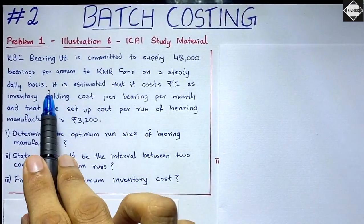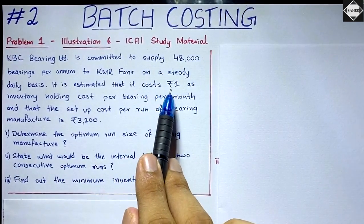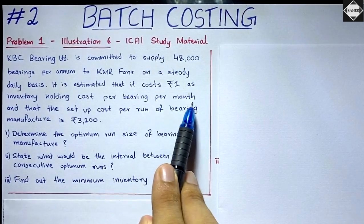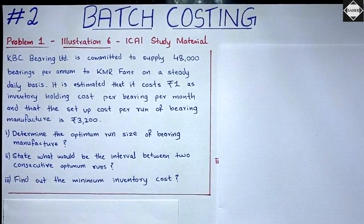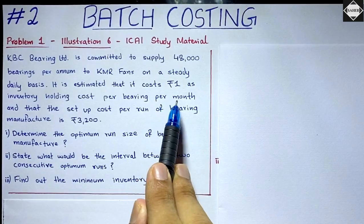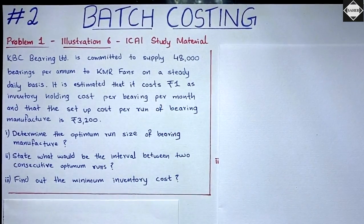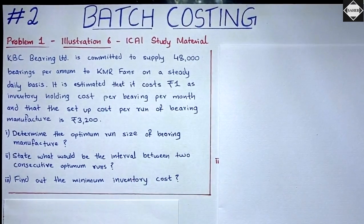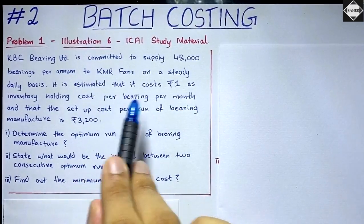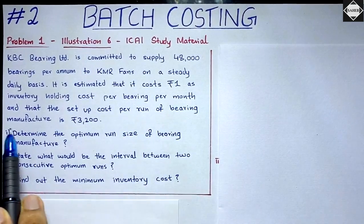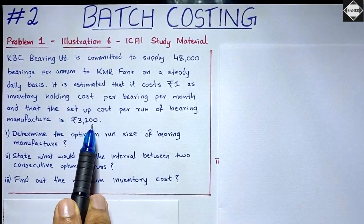It is estimated that it costs ₹1 as inventory holding cost per bearing per month. Note this is per month — we don't need that directly in the EBQ formula. We need the carrying cost per unit per annum, so we multiply by 12: ₹1 × 12 = ₹12. So ₹12 is the carrying cost per unit per annum. The setup cost per run of bearing manufacture is ₹3,200.